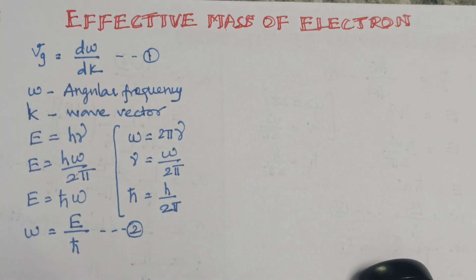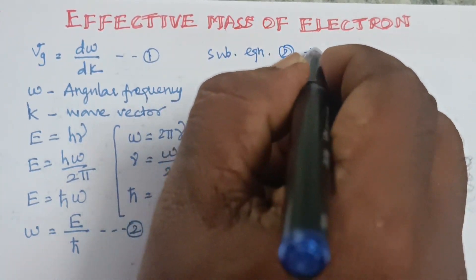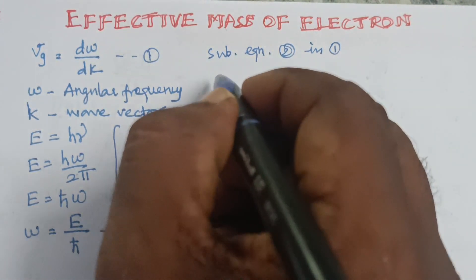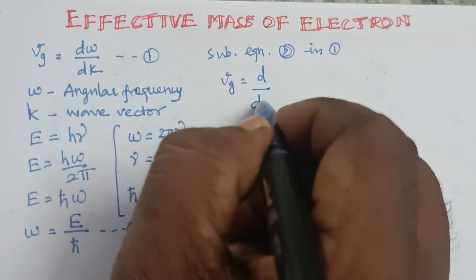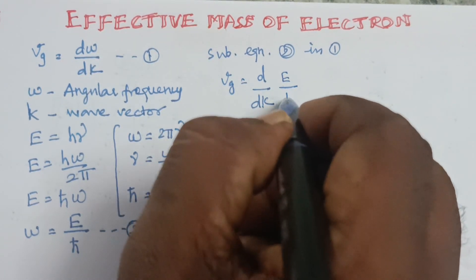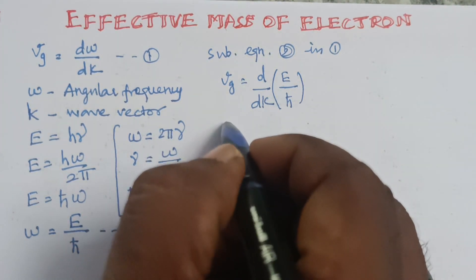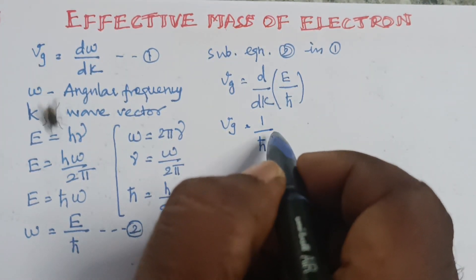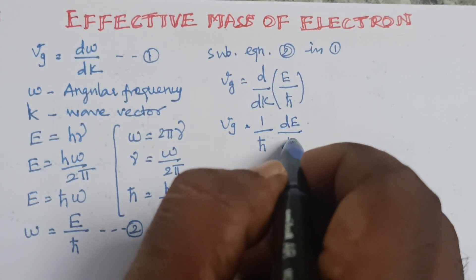Substituting equation 2 into equation 1: VG = d/dk(ω) = d/dk(E/ℏ) = (1/ℏ)(dE/dk).